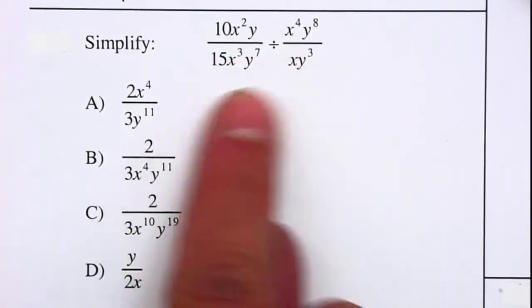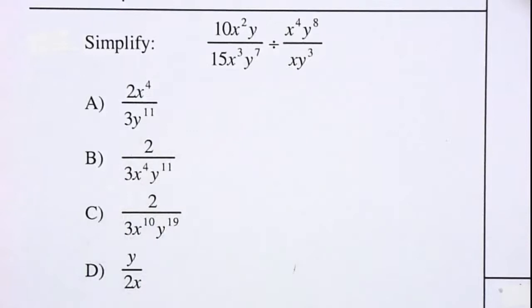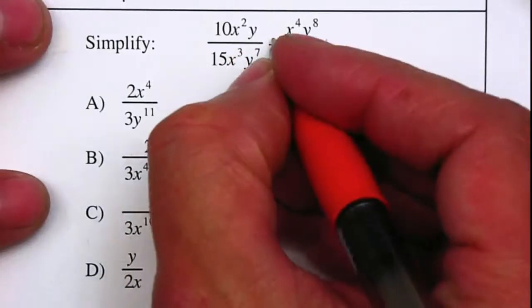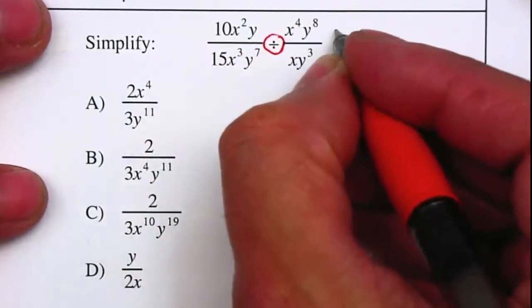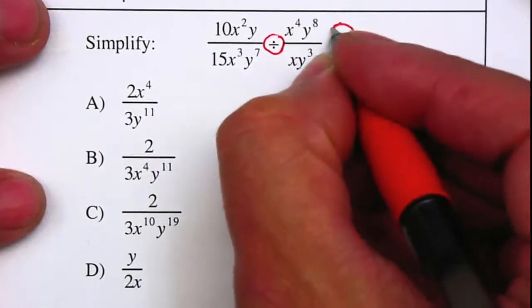Basically, a fraction divided by a fraction. When we have a division with fractions, we want to change your division to a multiplication by taking the reciprocal of the second fraction.